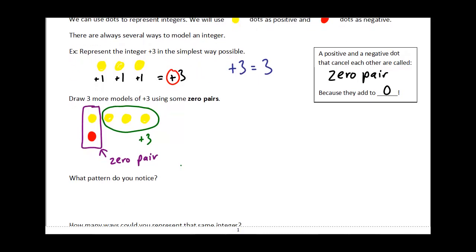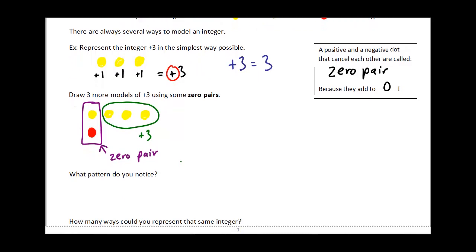Let's draw one more model of +3. Let's say I do six yellow dots. Four, five, six. If I want this to represent +3, then it would also have to have three little red dots, three little negatives. In this example, I would have three zero pairs. One, two, three. And those all cancel each other out. What I'm left with is three positives, which would be my +3.